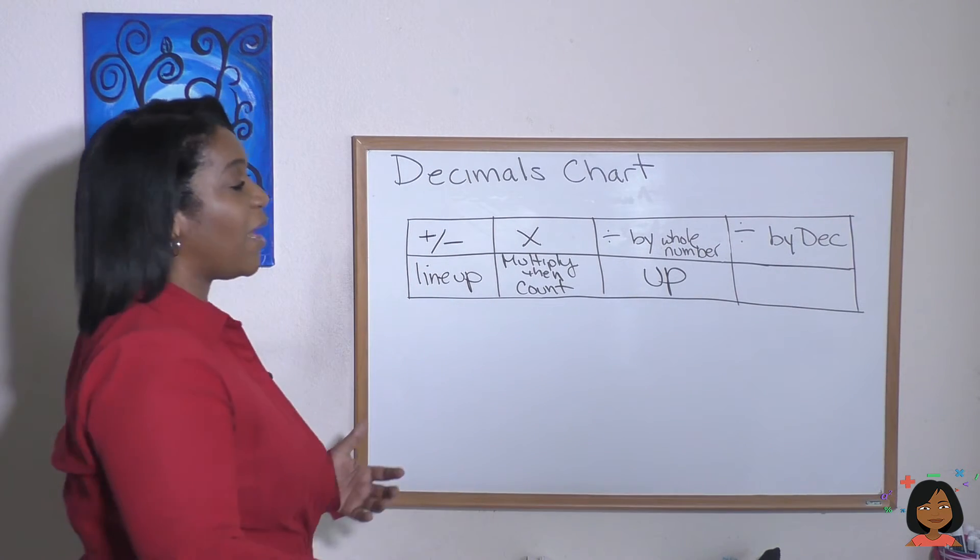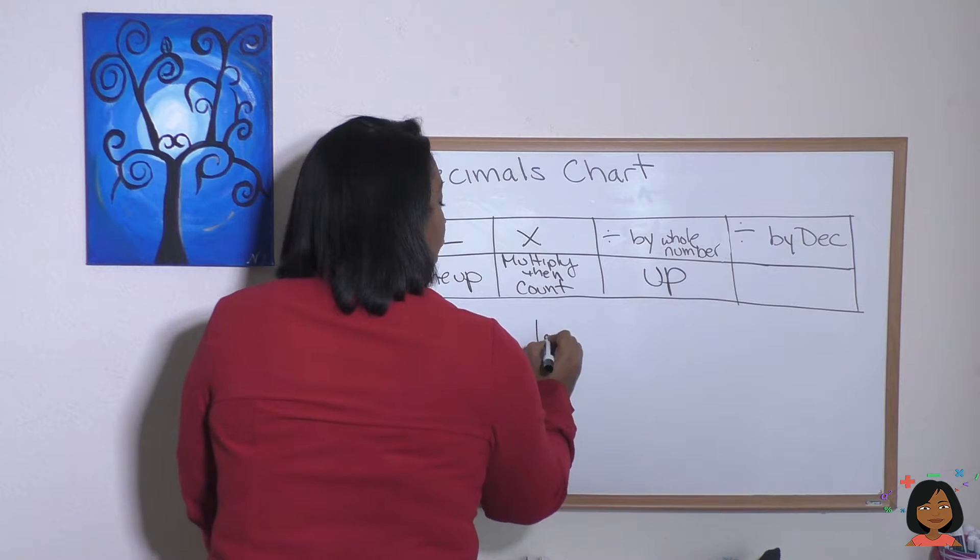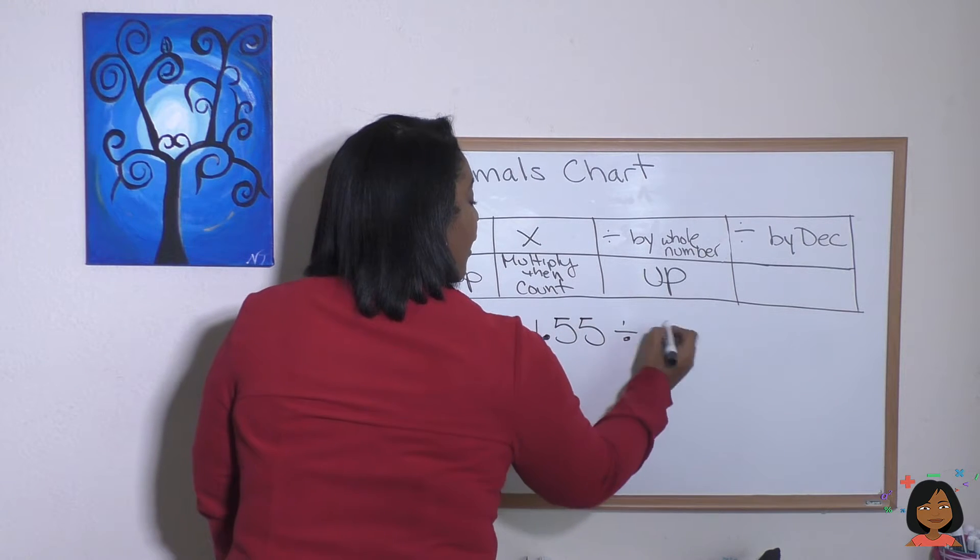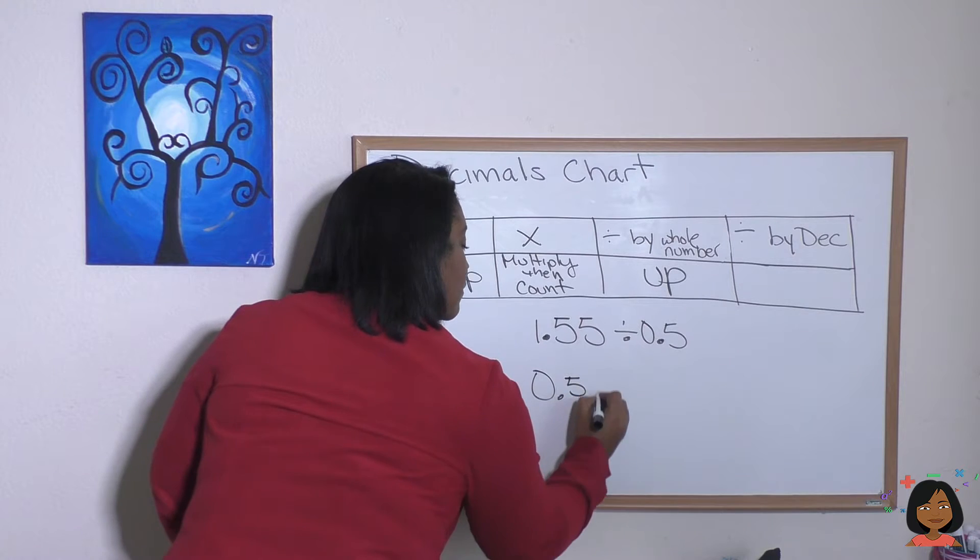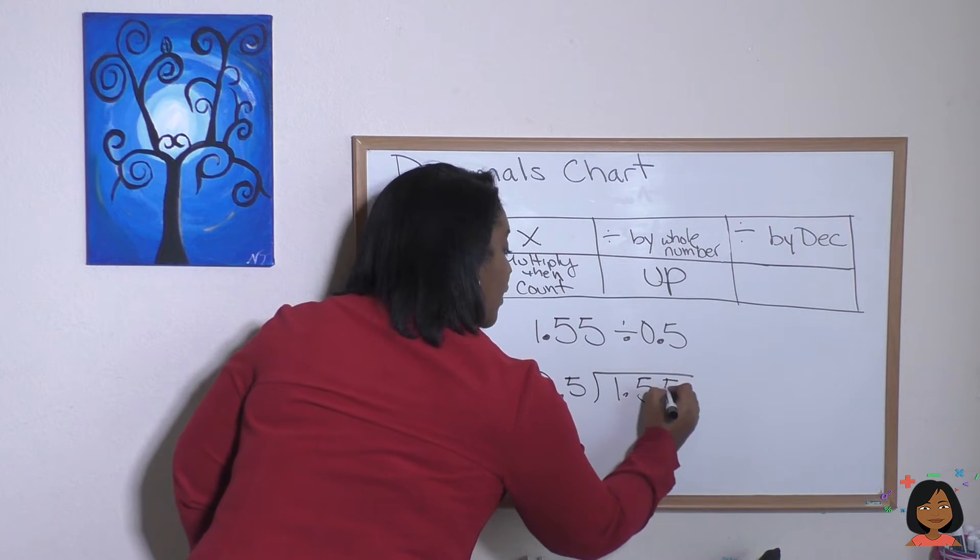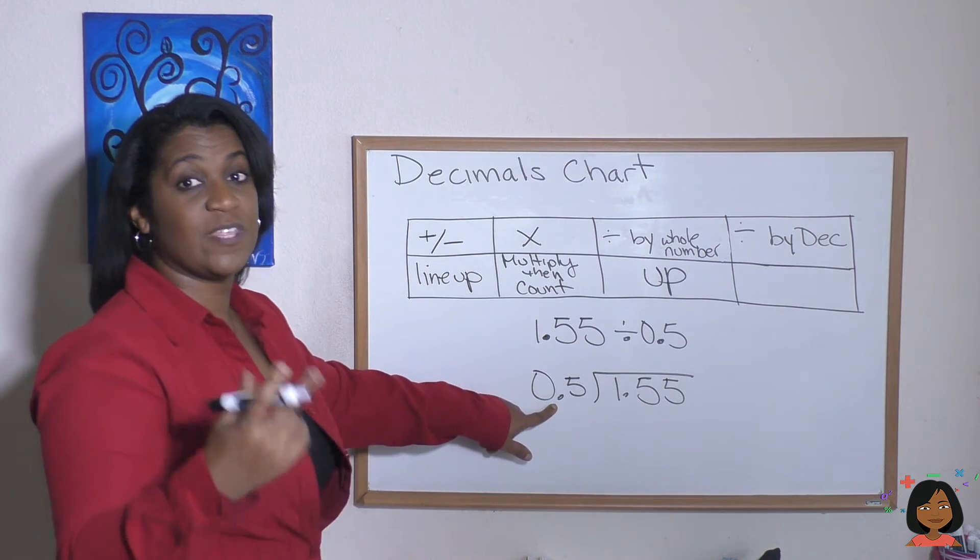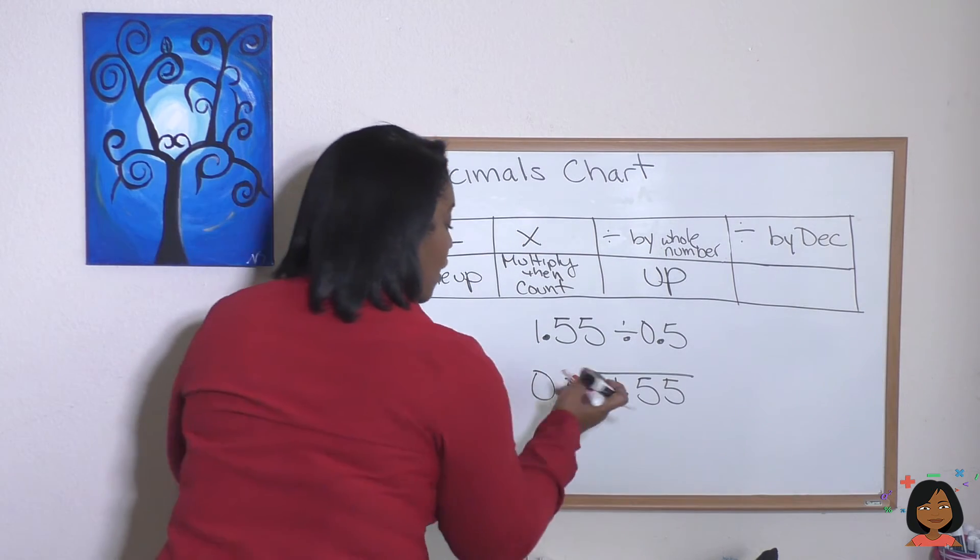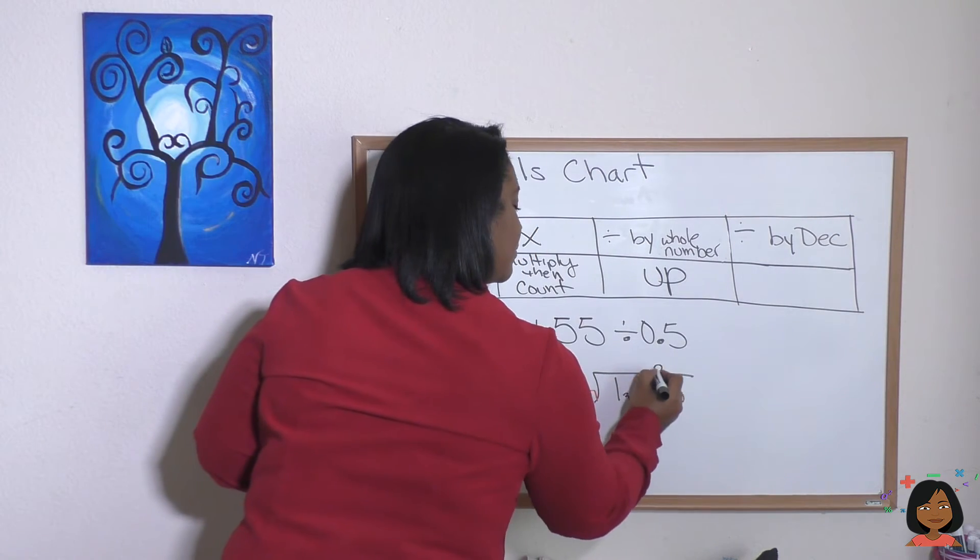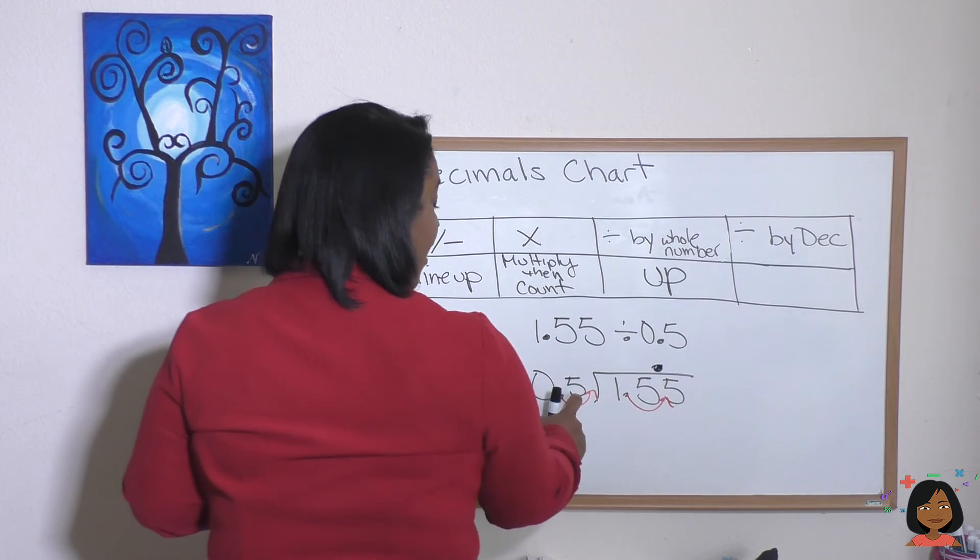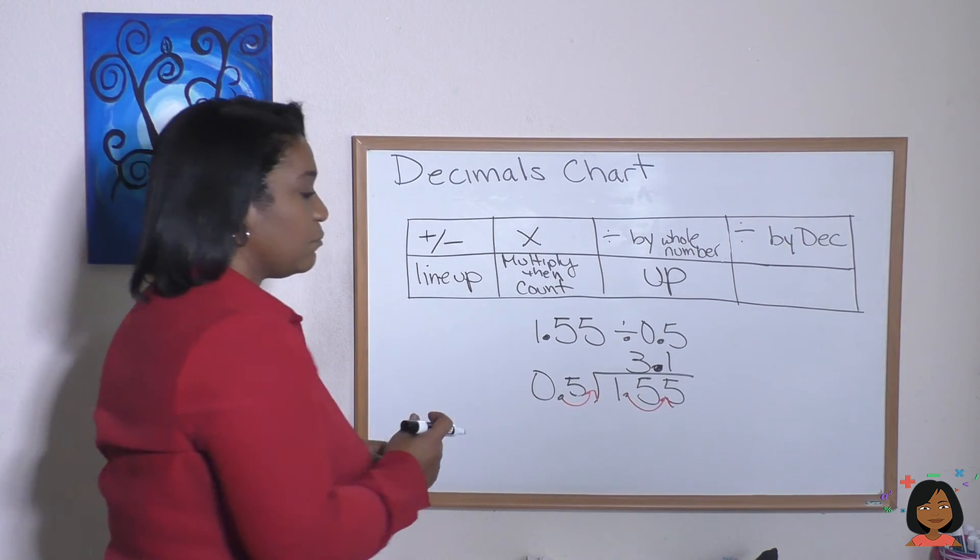What happens when we divide by a decimal? If we were going to do 1.55 divided by 0.5, let's set that up like a division problem. We know we can't just put our decimal in the quotient right away. We have to move this decimal over, which means we're going to move this decimal over, and now we can go up and do our math the same way. Five goes into 15 three times, five goes into five one time. So our shorthand would be over, over, and up.